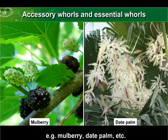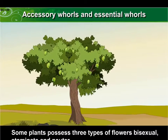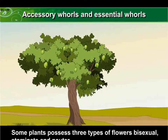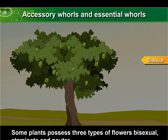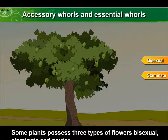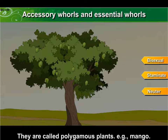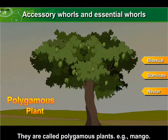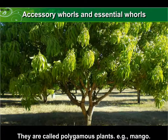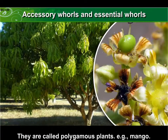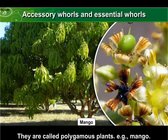Some plants possess three types of flowers — bisexual, staminate, and neuter. These are called polygamous plants. Example: mango.